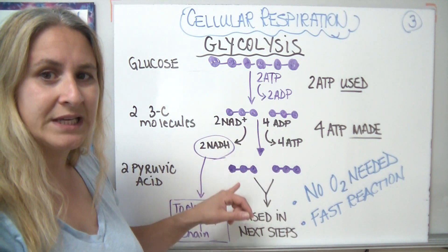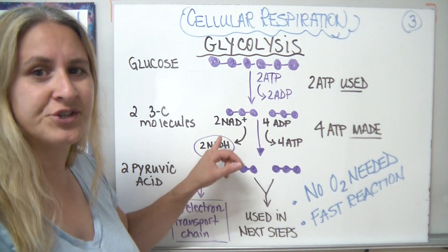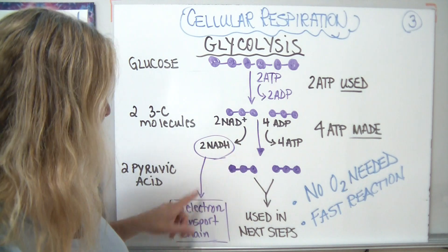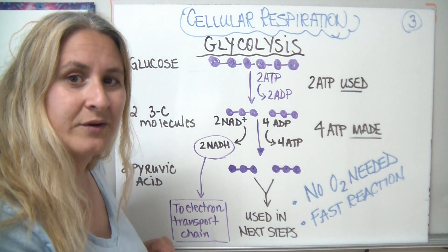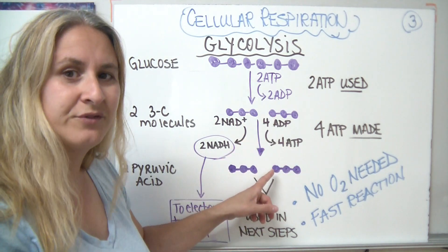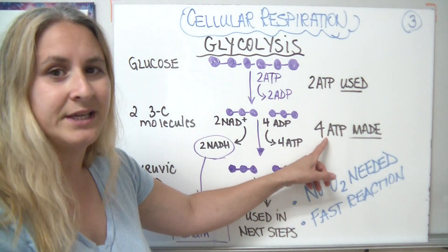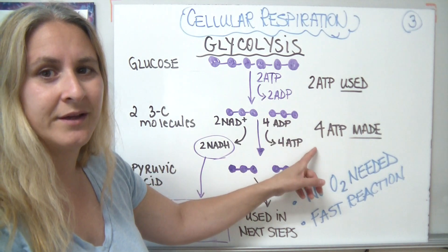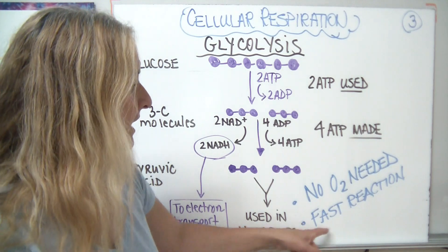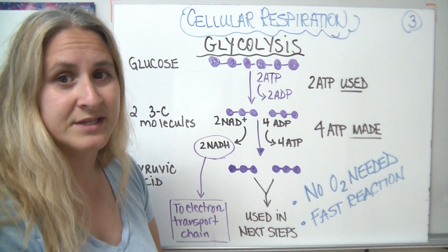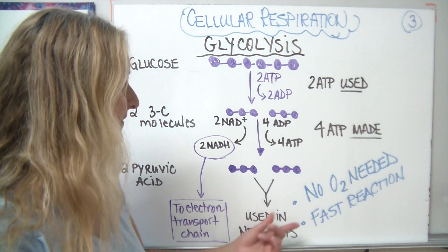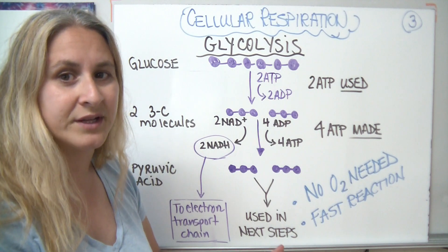Along the way as we rearrange to get pyruvic acid made, we're going to transfer two hydrogens to our hydrogen carrier or electron carrier called NAD+ to form NADH. That's going to be used later on if the organism carries out aerobic respiration in something called the electron transport chain. Along the way we're also going to make four ATP. So we used two ATP and we make four ATP. Keep in mind that there's no oxygen needed at all during these steps, and this is a pretty fast reaction — especially for simple organisms, a great way to get some quick energy.